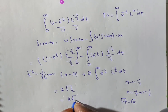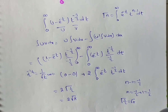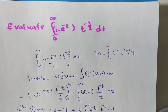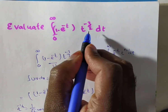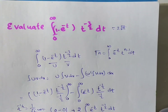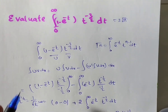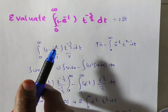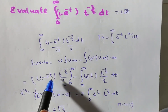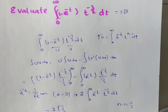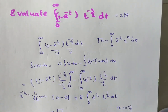We already know that gamma of 1 by 2 equals root pi, as proved in previous videos. So the answer is 2 root pi. Hence the integral from 0 to infinity of (1 minus e to the power minus t) into t to the power minus 3 by 2, dt equals 2 root pi. The key step was using the integral UV formula to convert the integrand into the standard gamma function form. Thank you for watching this video.